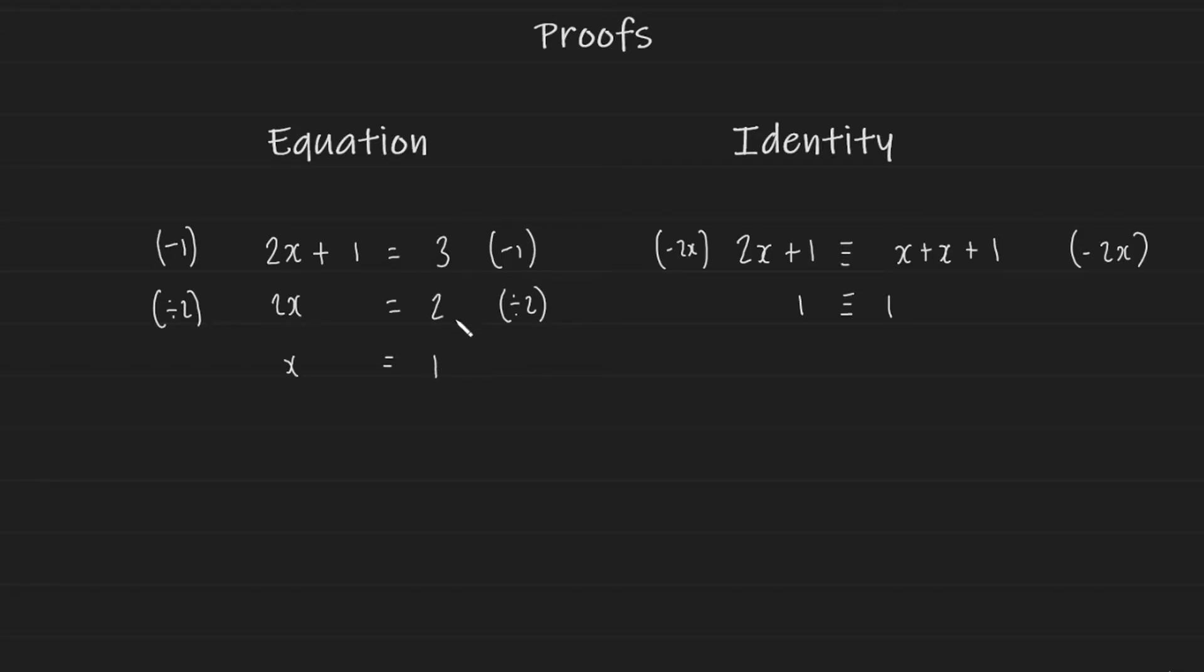So another point I should mention is that equations have equals symbols in them, while identities have equivalent symbols in them. And that's really it. That's the difference between an equation and an identity. An equation is one that can be solved. An identity is usually two forms of the same thing written in different ways.